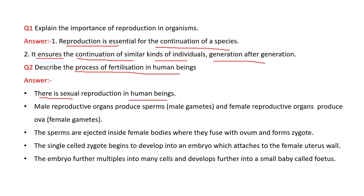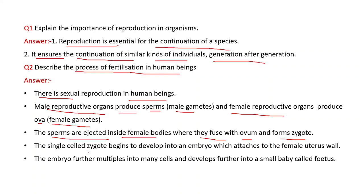Second question: Describe the process of fertilization in human beings. There is sexual reproduction in human beings. Male reproductive organs produce sperms, which are male gametes, and female reproductive organs produce ova, which are female gametes. The sperms are ejected inside the female body, where they fuse with the ovum and form a zygote.